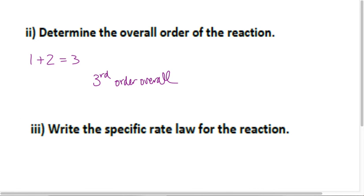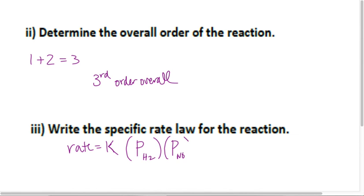Write the specific rate law. Rate equals K. Now you can't use brackets here — it's pressure. Brackets indicate concentration, and some AP readers are hung up on those details. So if it's pressure, use parentheses: rate equals K times pressure of H2 to the first times pressure of NO squared. H2 was first order and NO was second order. Make sure you couple the correct order with the correct reactant.